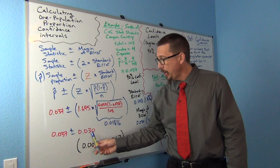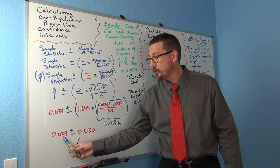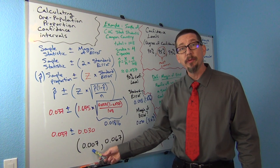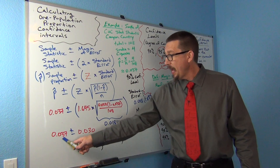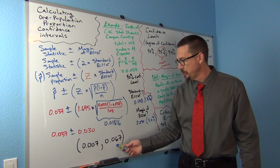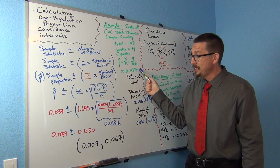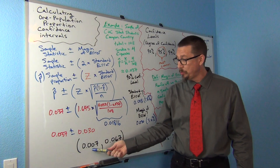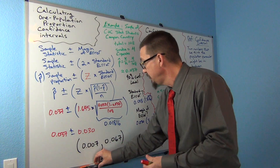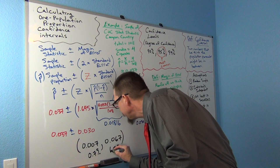Now it's just adding and subtracting. The confidence interval is the sample proportion .037 plus or minus the margin of error .030. So .037 minus .030 gives .007 — that's the lower limit of the confidence interval. And .037 plus .030 gives .067 — that's the upper limit. So if my sample proportion was .037, that doesn't tell me the population is .037; it tells me the population percentage could be anywhere from .007 to .067. Written as percentages, that's .7% to 6.7%.